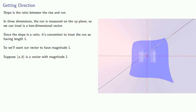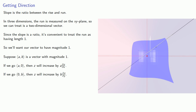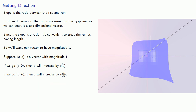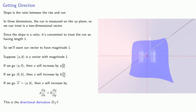Now, suppose we have a vector with magnitude 1. If we run in the direction parallel to the x-axis, then z will increase by a times the partial of z with respect to x, because a is the amount by which x is changing, scaled by the rate of change of z with respect to x. Similarly, if we go in the direction parallel to the y-axis, then z will increase by b times the partial with respect to y, because y is increased by amount b and the partial gives us the rate of increase. So if we go in the direction (a, b), z will increase by the sum of these two increases. This is the directional derivative, which we indicate using the notation d_v f.